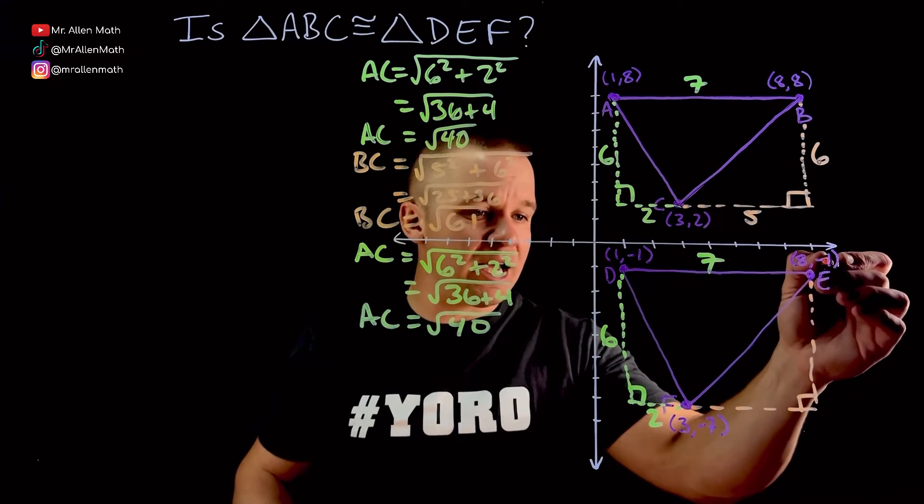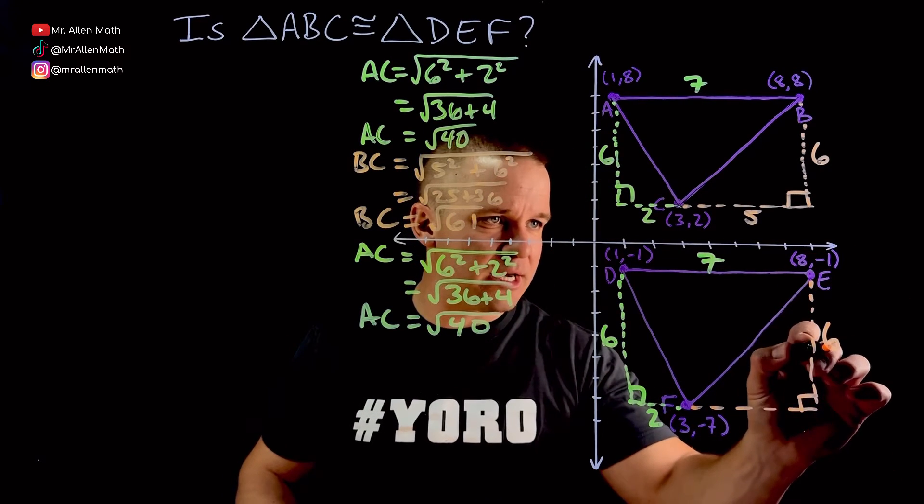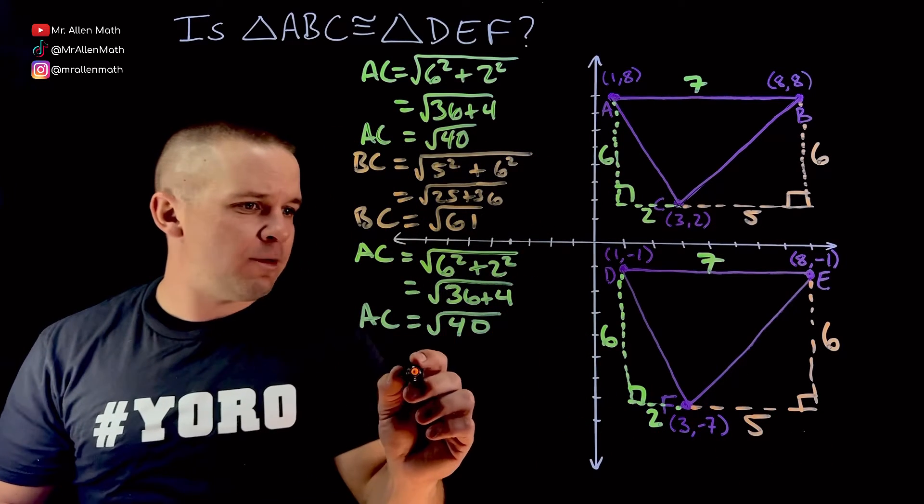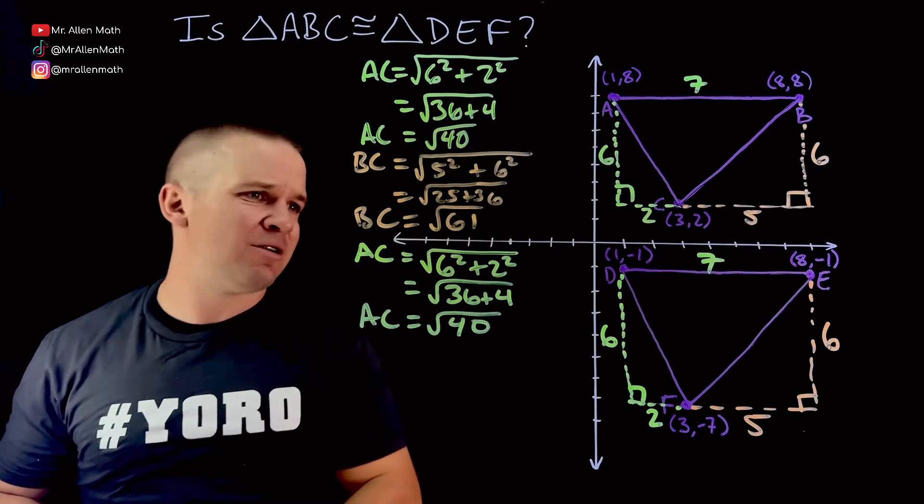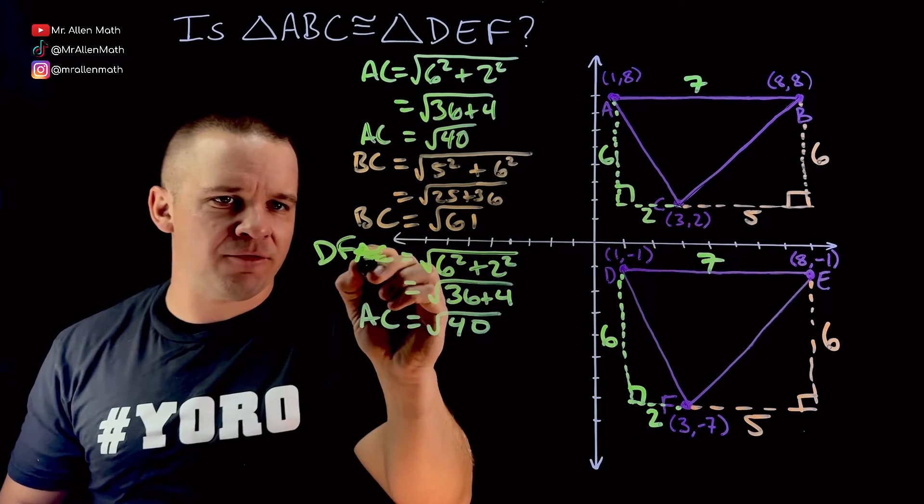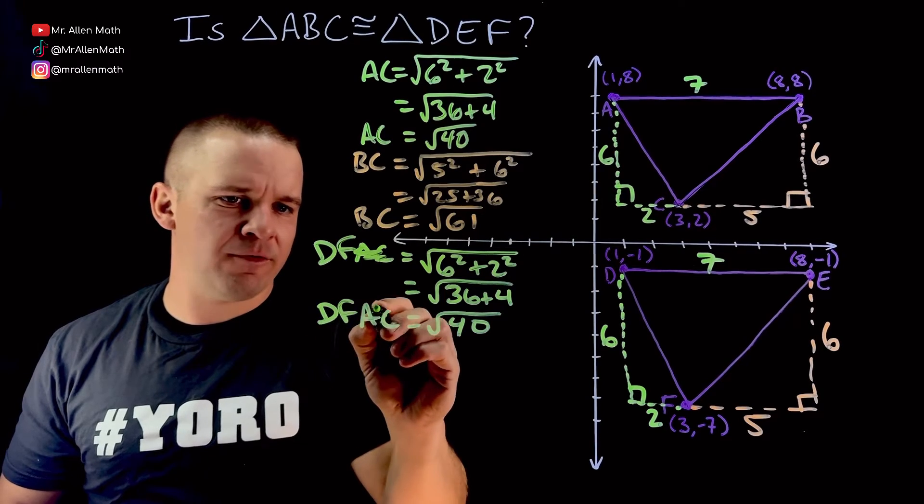I love math. Let's draw this triangle in. I'm going from negative 1 down to negative 7, that's a drop of 6. From 3 to 8, that's 5. So, once again, now we got... Why did I say AC? My goodness, Mr. Allen. That's DF.